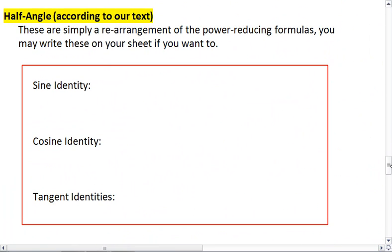Your text gives you slightly different half angle formulas, and these are what your text calls the half angle formulas. They're actually just a rearrangement of the half angle formulas from your little sheet, which are also your power reducing formulas.